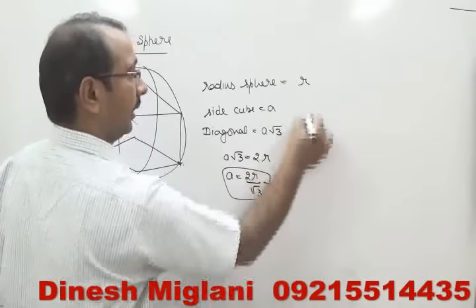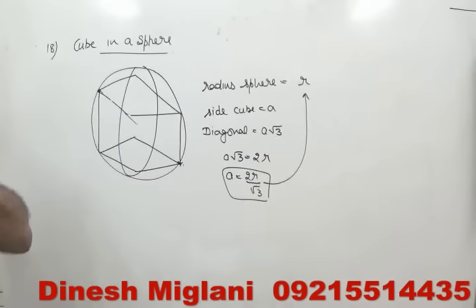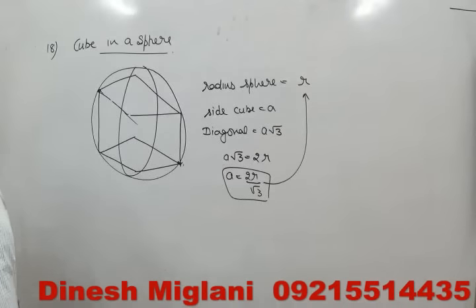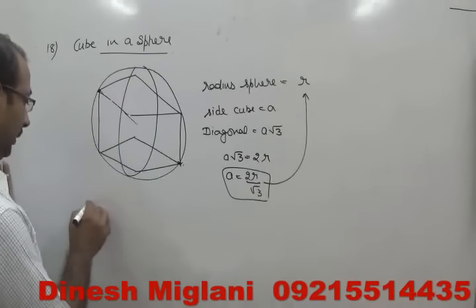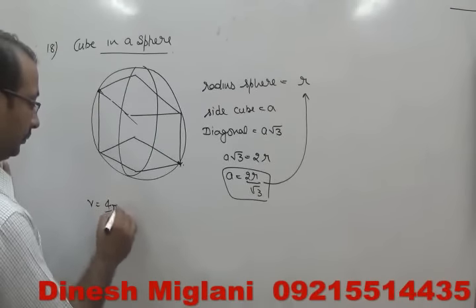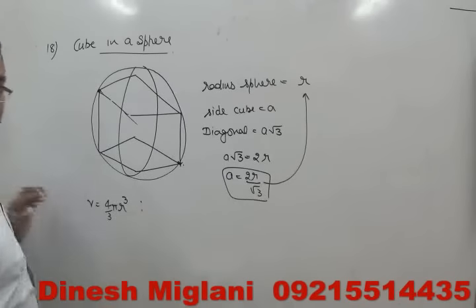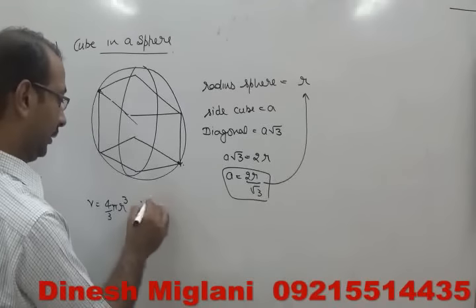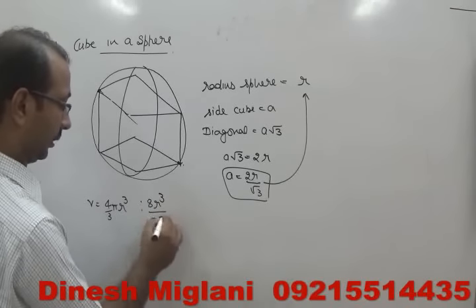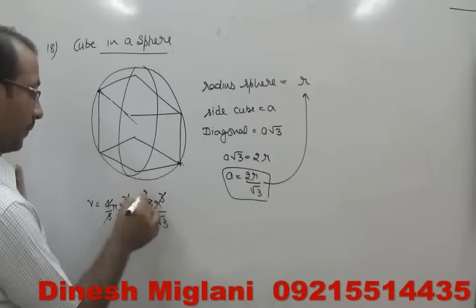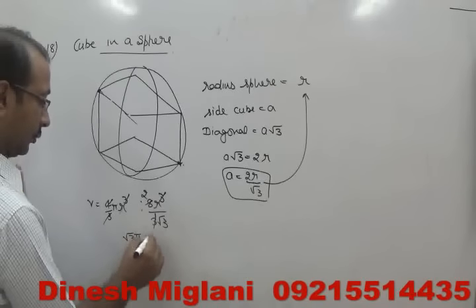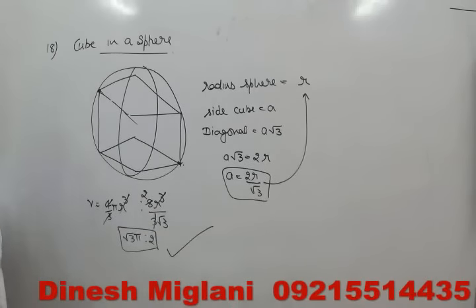Simplifying the ratio of sphere volume to cube volume: after cancellation of r³, 3, and 4 going to 2, we get √3π : 2. So the ratio of volumes is √3π : 2. Now for a sphere inscribed in a cube: the side of the cube equals the diameter of the sphere, so radius = a/2. Volume of cube is a³, volume of sphere is (4/3)π(a/2)³ = πa³/6. Ratio of cube to sphere = 6 : π.